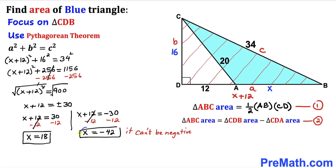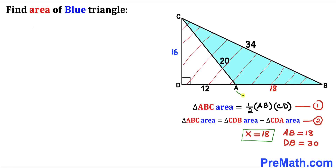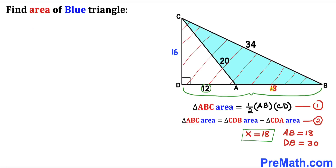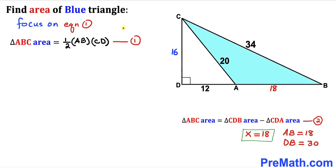Since x represents a distance, x cannot be negative. So we reject x = −42 and accept x = 18. Therefore side length AB turns out to be 18 units. Moreover, side length DB is going to be 12 plus 18, which gives us 30 units.